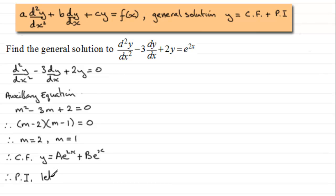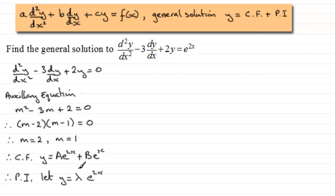We would normally say, for something that contains an exponential function, let y equal some constant lambda multiplied by e to the power 2x. But notice we have in our complementary function a term which is essentially of the same form — a constant times e to the power 2x. We can't have the same kind of term in both situations. So to get around this problem, what we always do is multiply by x, giving us lambda x e to the power 2x as our particular integral.